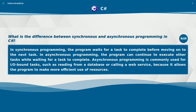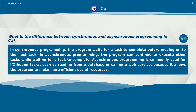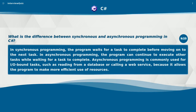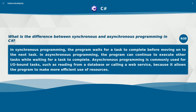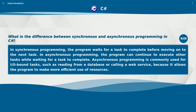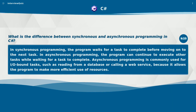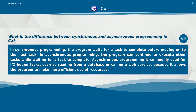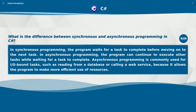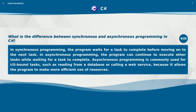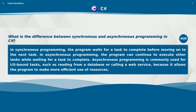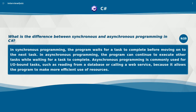What is the difference between synchronous and asynchronous programming in C#? In synchronous programming, the program waits for a task to complete before moving on to the next task. Asynchronous programming is commonly used for I/O-bound tasks, such as reading from a database or calling a web service, because it allows the program to make more efficient use of resources.